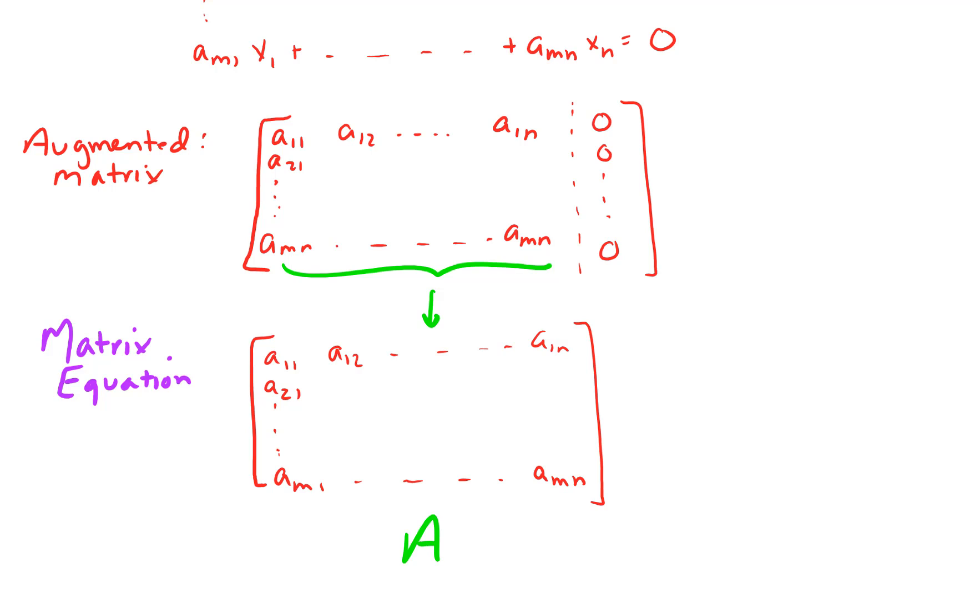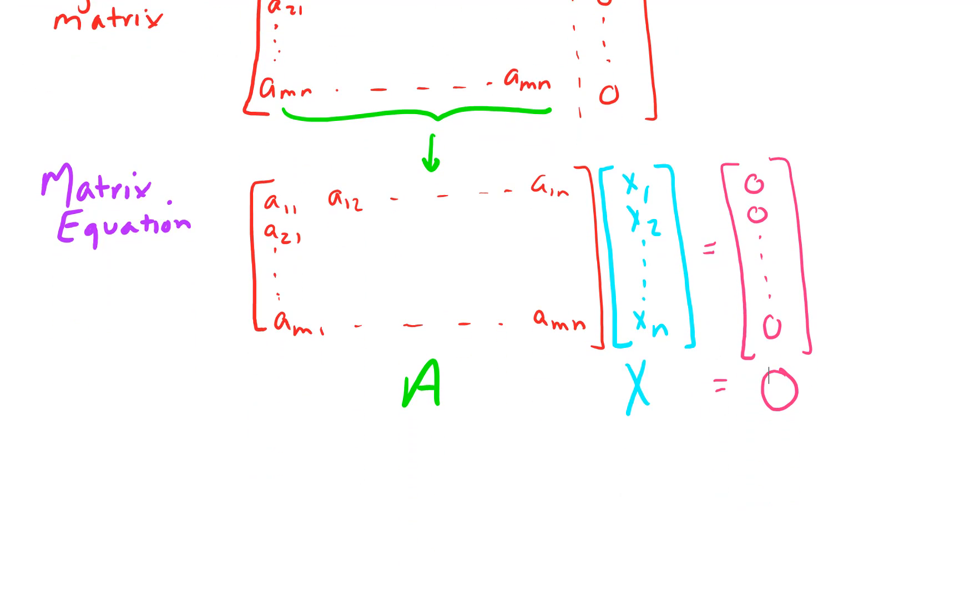And then, of course, we have our variables x1, x2, all the way up through xn. So that column vector, I'm going to call it capital X. And then on the right-hand side of the equation, we have equals a zero vector, in this case, because it's a homogeneous system. So I'm going to denote it as a big zero to denote the zero vector.